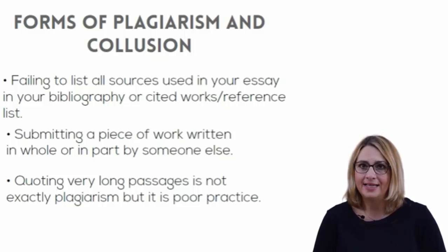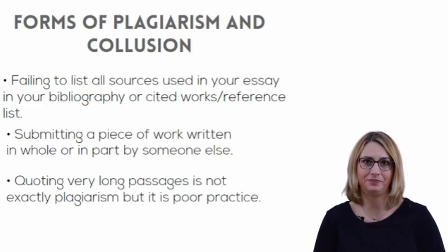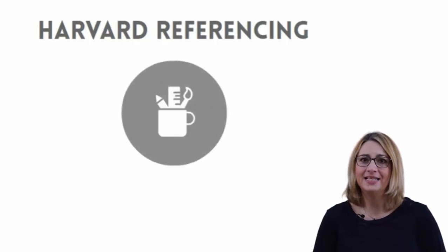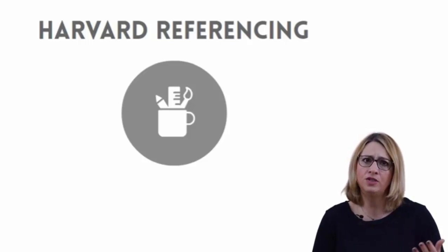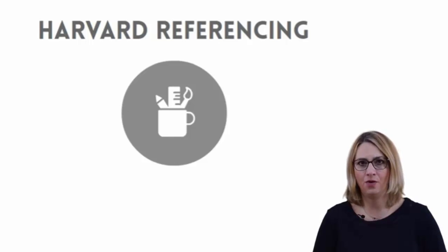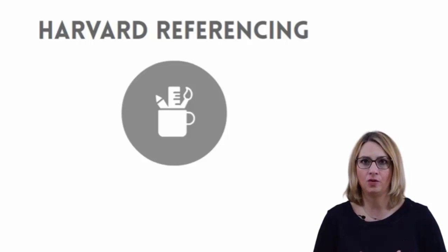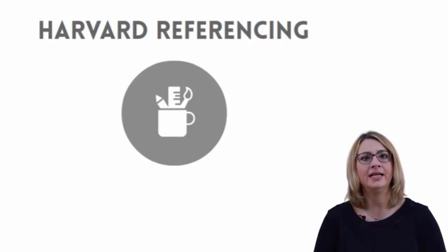Quoting very long passages, unless the point being made is particularly complex and needs an extensive quotation, is not exactly plagiarism, but it is poor practice. Harvard referencing is a citation style where the in-text citations contain a minimal amount of information about the source — mostly the author's surname, date of publication, and sometimes page number. The in-text citation is surrounded by parentheses, also known as rounded brackets. This can be embedded within a sentence or placed at the end of a sentence. The full details about the source are then placed at the end of the document in a bibliography or cited works reference list, with each entry normally listed in alphabetical order.